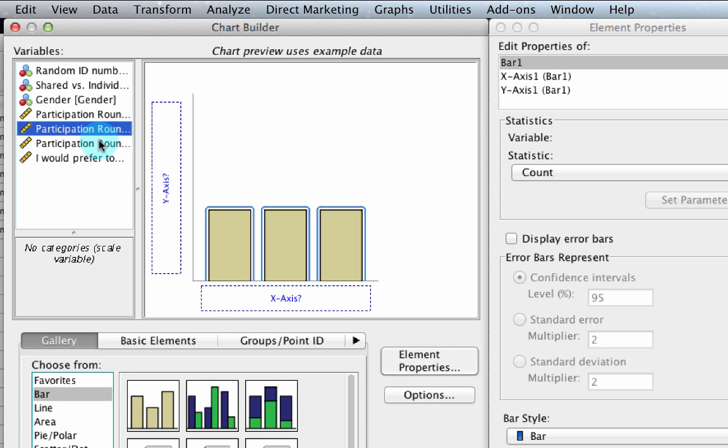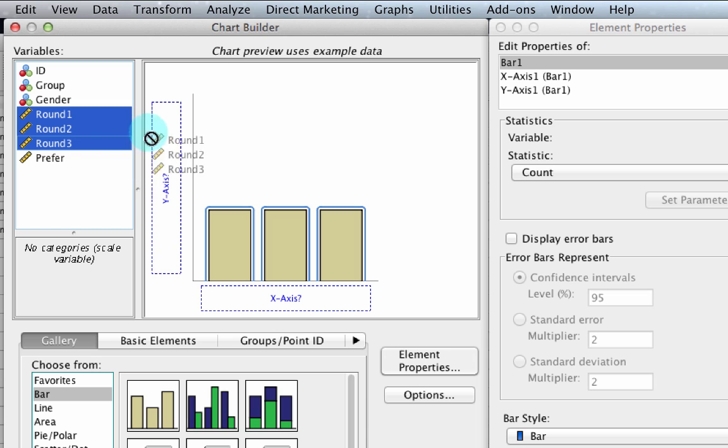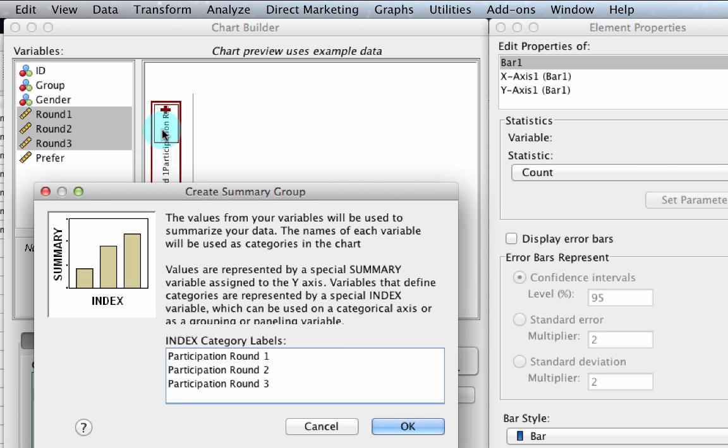Under variables, I'm going to make sure that I'm showing the variable names. Now click on round one and holding down the shift key, click on round three. All three variables are selected. Without letting off the shift key, click on any of those three variables and drag all three simultaneously into the y-axis drop zone. Until you see the red plus sign, you can let off the shift key and then click OK to accept the resulting dialog box called create summary group.